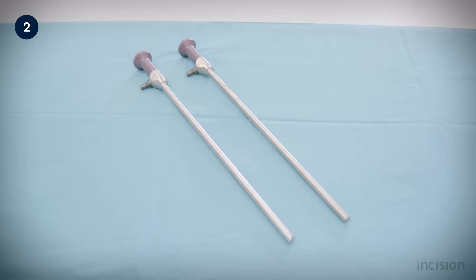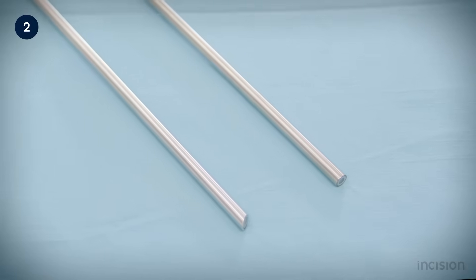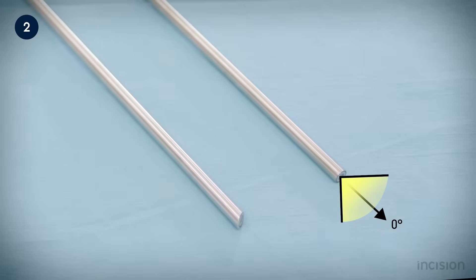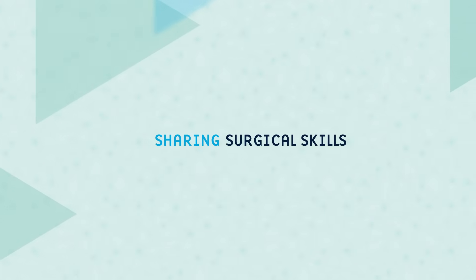Laparoscopes have different diameters, the most commonly used being 10mm, and the distal lens, or objective lens, can have different angles, changing the optical axis and allowing for different types of view, such as the zero-degree scope on the right of the screen, offering a straight-on panoramic view, and the 30-degree scope on the left, offering an oblique forward-facing view.